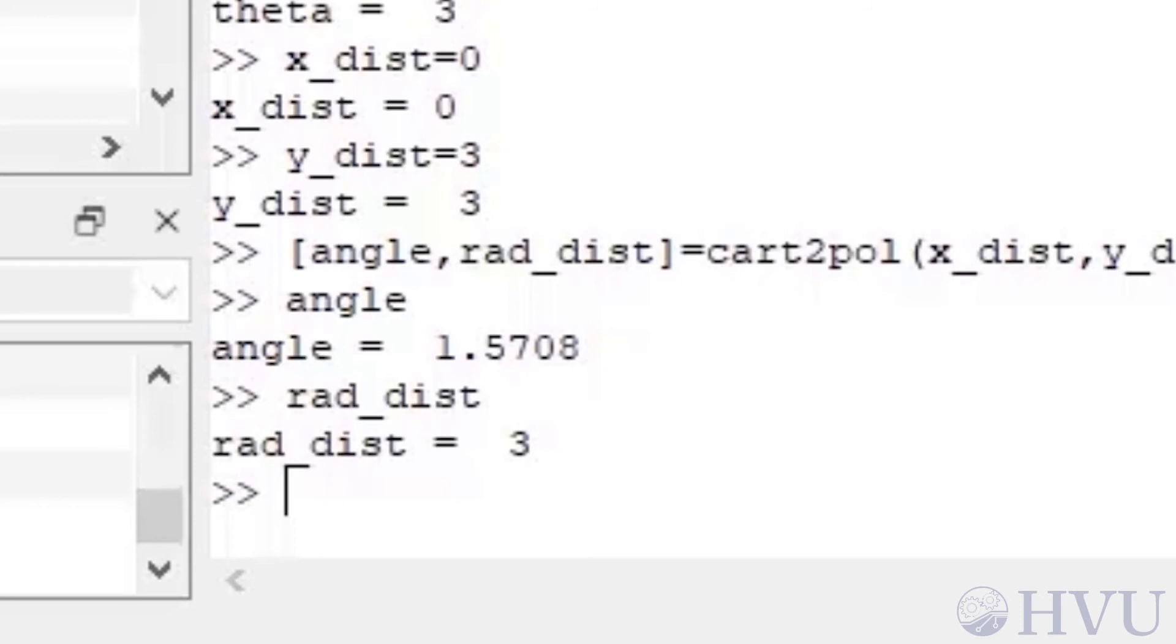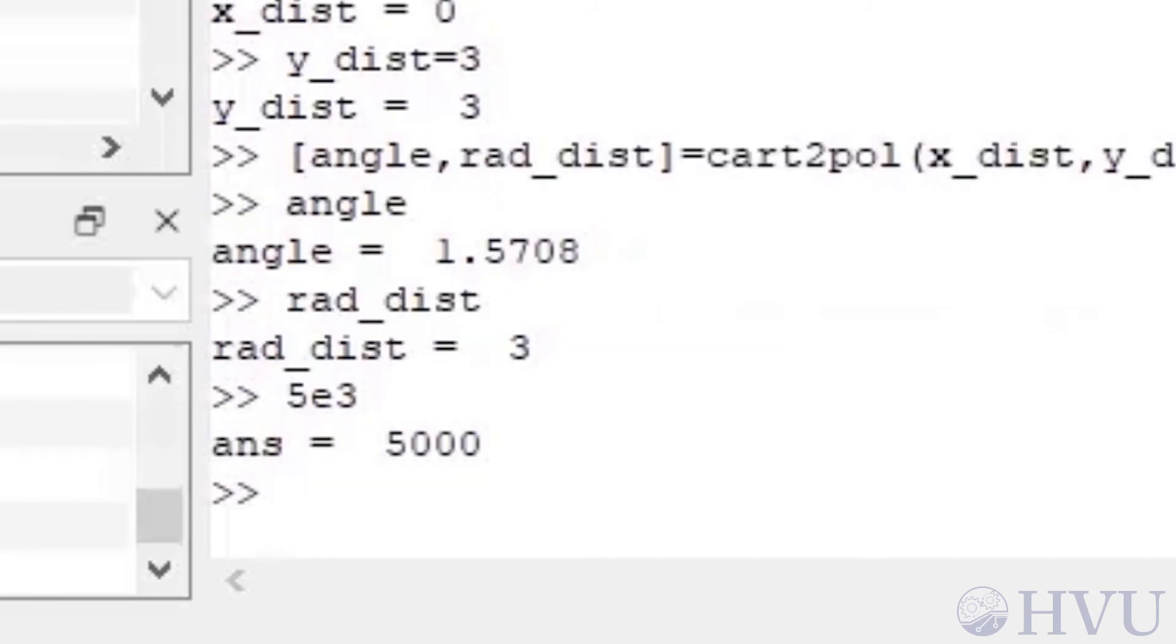Octave has a predefined variable e that corresponds to 2.7183 and so on. The character e is also used to denote exponential notation. So 5×10³ is defined by typing 5e3 at the command prompt. Octave's exp function also calculates exponentials. To find e², type exp(2).